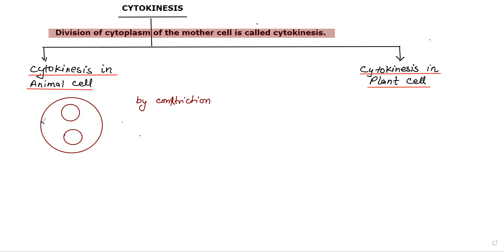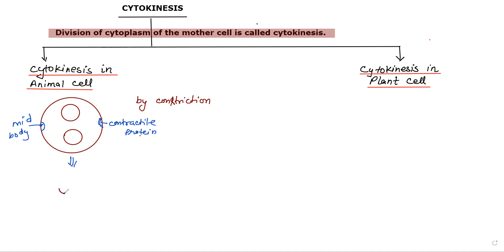At this constriction site, a contractile protein is present — this is the mid-body part. What will happen is that the cell will constrict, and then the main division takes place in a centripetal direction — that is, centripetal division.